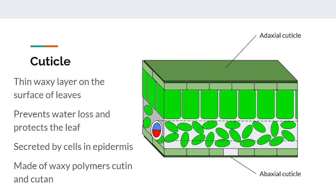The last part of our leaf sandwich is the cuticle, a thin waxy layer found on the surface of leaves that is impermeable to water. You can think of it as the crust to the bread on our leaf sandwich. Its main function is to prevent water loss through anywhere except the stomata, but it also protects the plant against physical and toxin damage. It is secreted by the cells in the epidermis and is made of two main waxy polymers, cutin and cutan. The adaxial surface of a leaf typically has a thicker cuticle since it is more exposed to the sun. Sun leaves will also have thicker cuticles than shade leaves. Plants in drier climates also tend to have thicker cuticles because retaining water is much more important when it is a scarcity. Another adaptation plants in drier or hotter climates have to help retain water is having fewer stomata, which will reduce water loss because there are fewer openings for transpiration to take place.